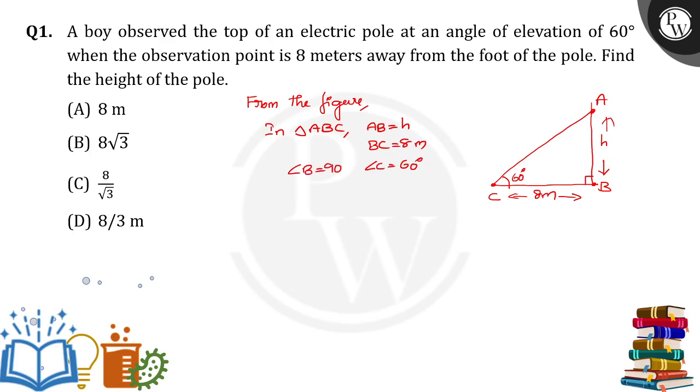Since we have to calculate the value of h, we have to apply the trigonometric ratio tan. So tan 60 degrees is equal to opposite side by adjacent side, so AB by BC. Tan 60 is root 3, root 3 is equal to h by 8. Then if I transpose 8 to the LHS, I will get h is equal to 8 root 3 meters.